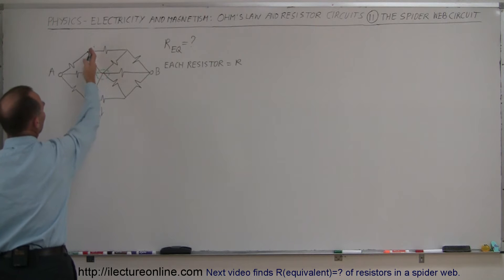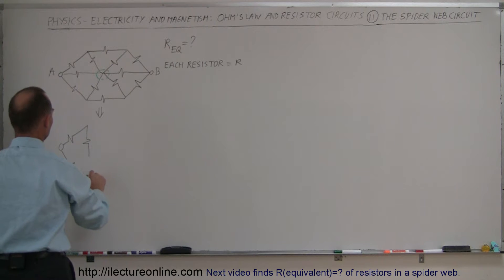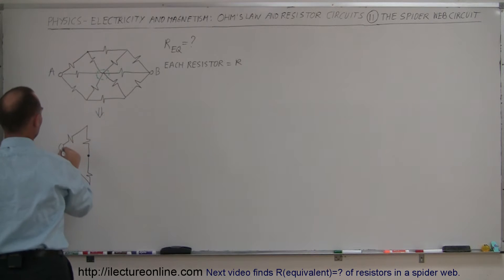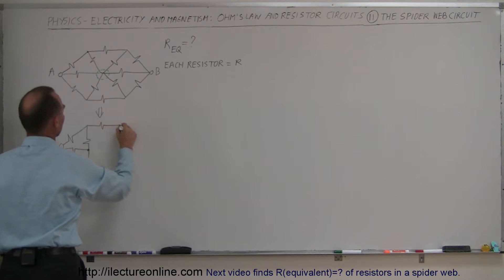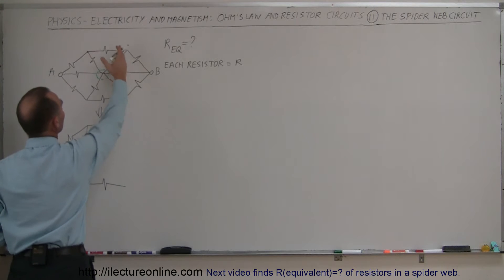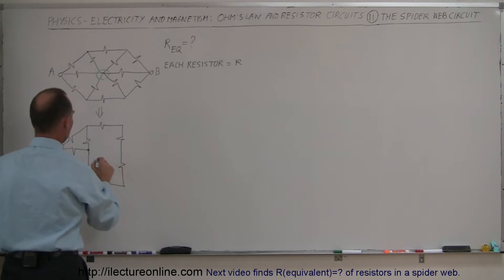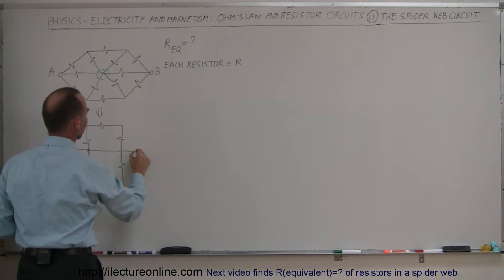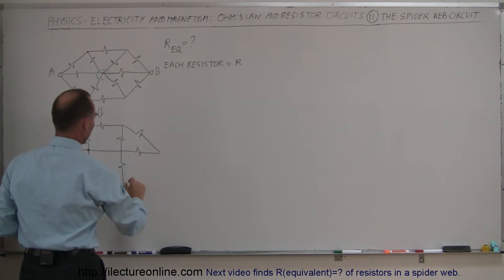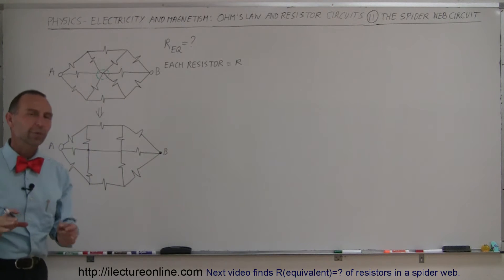Instead of having this resistor coming out this way, I'm going to bring it straight down, like that — same on the other side. And here's this resistor straight up so that they come together at this point. We have this horizontal resistor right here. I have the exact same circuit as before, just redrawn a little bit so that we can look at it in a slightly different way.